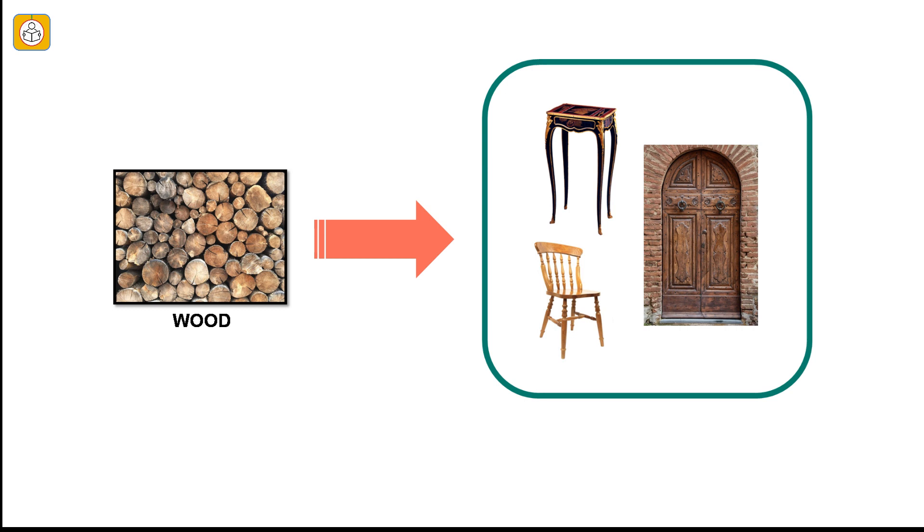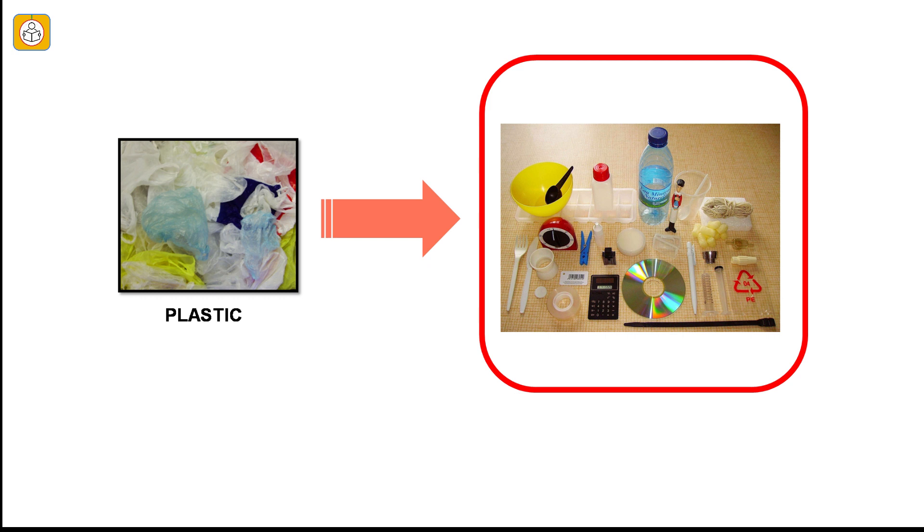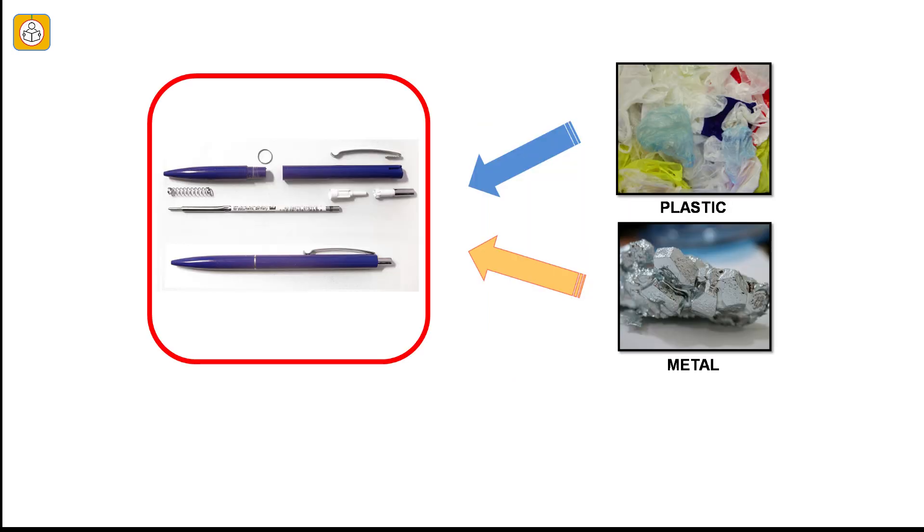Chair, table, doors are some objects which are made up of wood. The picture shows some of the most common objects made up of plastic. There are also certain objects which are made up of more than one material. Let us take the example of a simple ballpoint pen. The body is made up of plastic. The spring and ballpoint nib is made up of metal.